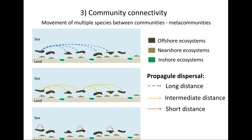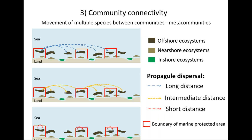With community connectivity, recognizing that different species disperse different distances has key implications for both the size and spacing of protected areas in a network. For short distance dispersers, MPAs need to be big enough to encompass those dispersal distances so those populations become self-replenishing within the protected area, since they won't contribute to replenishment of adjacent MPAs. For intermediate dispersers, spacing between MPAs influences the extent to which young generated by one MPA contribute to populations nearby and help replenish protected populations in adjacent MPAs.